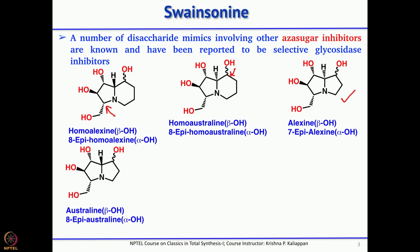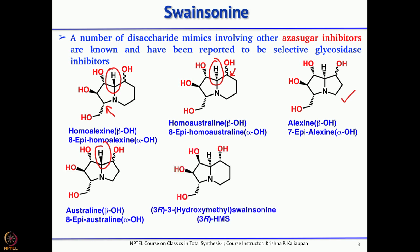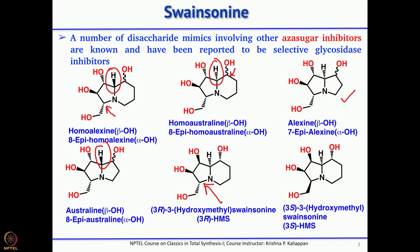Astraline differs only in the ring junction. Here also the ring junction differs. This one is a 6-membered ring — you can call it hydroxymethyl swainsonine, since swainsonine is without the CH₂OH. So there are many related alkaloids, and they are potential aza-sugar inhibitors.